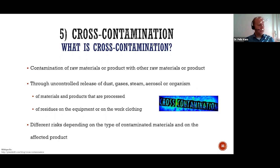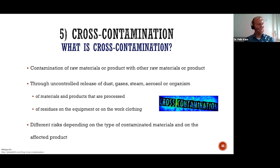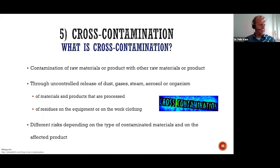Cross-contamination is a contamination of raw material, of bulk, of intermediate product, or of finished product with other material. How can this contamination occur? For example, by release of dust, of gas, of steam, or by residues on your protective clothes, by residues on the equipment.